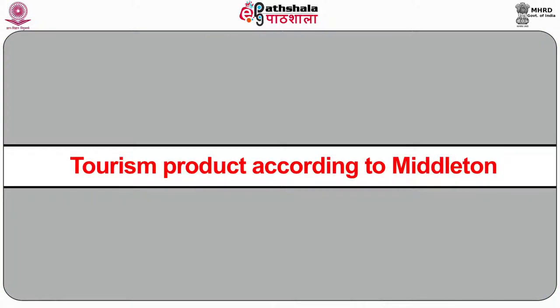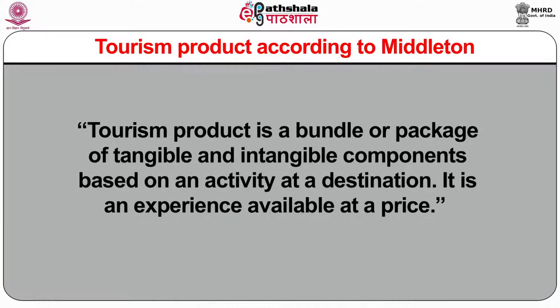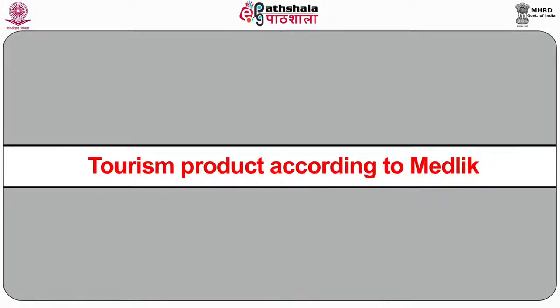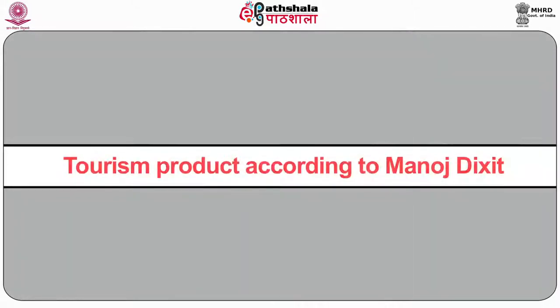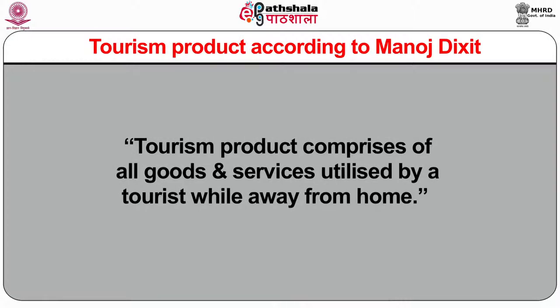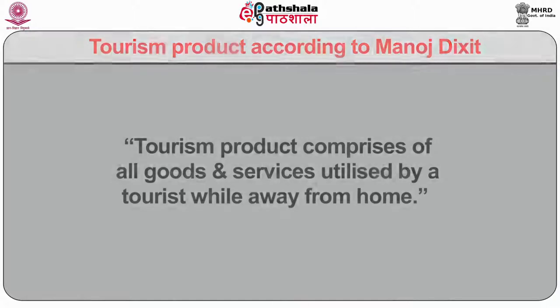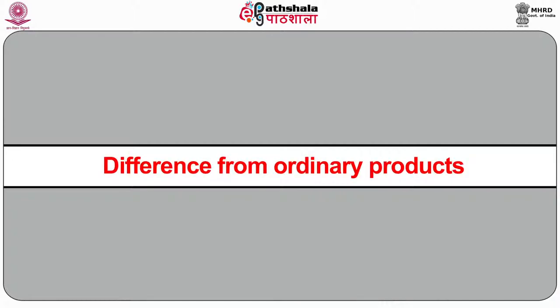Some social scientists and authors have defined tourism products as follows. According to Middleton, a tourism product is a bundle or package of tangible and intangible components based on an activity at a destination — it is an experience available at a price. According to Middleton, the tourism product covers the whole experience of tourism. According to Manoj Dixit, a tourism product comprises all goods and services utilized by a tourist while away from home.